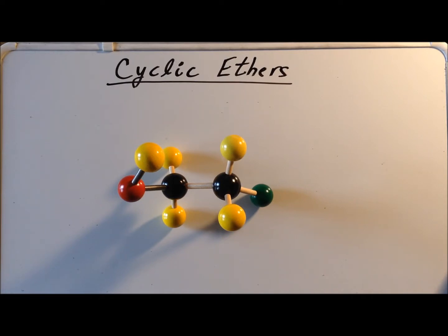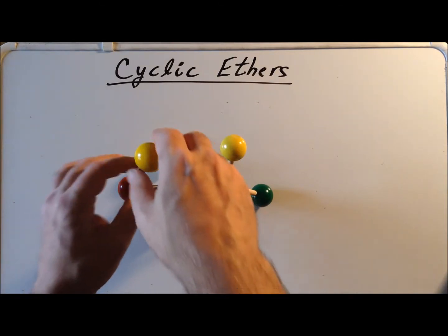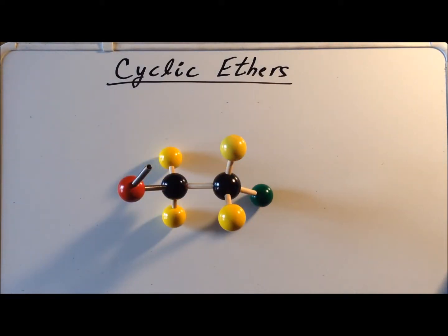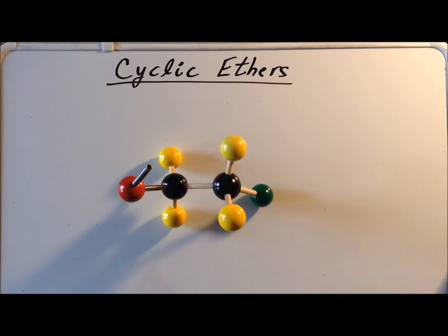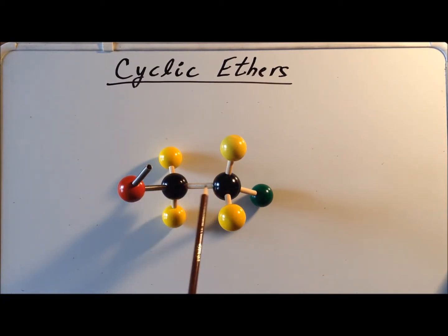The first step in the reaction is the abstraction of the hydrogen atom from the hydroxy group. It leaves as H+, leaving behind its electrons, which we're representing here as a spring. Now the oxygen, with its electrons, is correctly positioned for a backside SN2 attack on this carbon. One thing to be careful of is that we have arranged this so that the oxygen is in exactly the right position for the nucleophilic attack, but the molecule might not necessarily always be in that particular conformation.